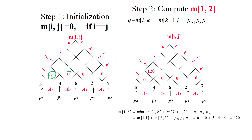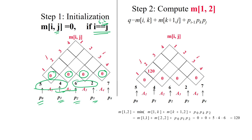So m[1,1]=0, m[2,2]=0, m[3,3]=0, m[4,4]=0 — wherever i equals j, that position is initialized to 0. The dimensions of all matrices are given: A1 is 5×4, A2 is 4×6, A3 is 6×2, and A4 is 2×7.